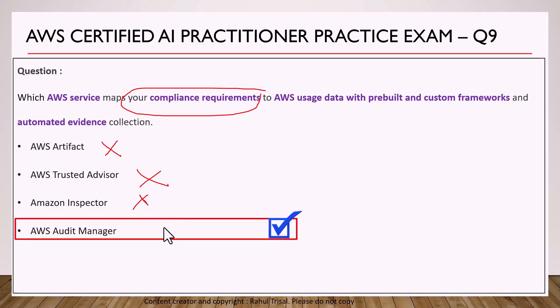The fourth option is AWS Audit Manager, which is the correct answer. AWS Audit Manager collects data from different services within your account — such as CloudTrail, AWS Config, and Security Hub — and maps it to pre-built or custom frameworks you have selected. For example, if you're in the banking industry and need to comply with PCI DSS, it collects data from those services and checks if you are compliant. The other really important feature is automated evidence collection for audit purposes.